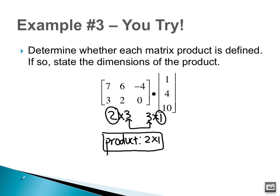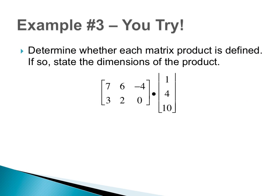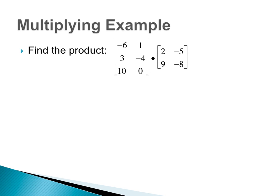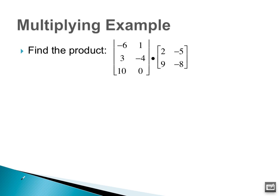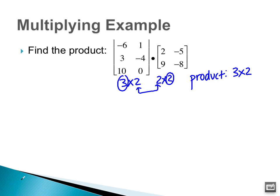Now that we know when it is possible to multiply the matrices, we're actually going to multiply them. First thing: check whether or not it is possible. We are going to trick you sometimes and it's not going to be possible. The first matrix is three by two, the second one is two by two — these match. So yes, it is possible. The product is going to be three by two. The multiplying part is pretty tricky: you want to multiply each row within the first matrix by each column in the second matrix.